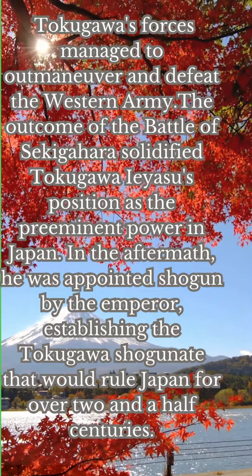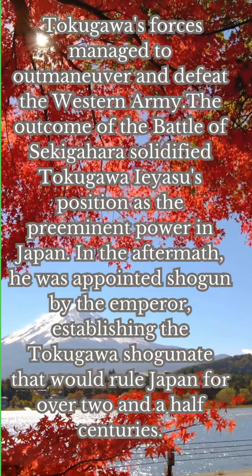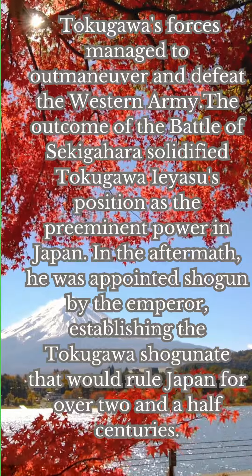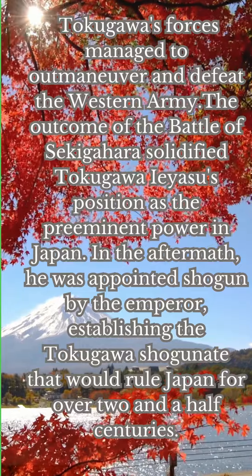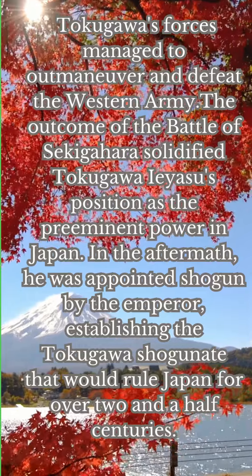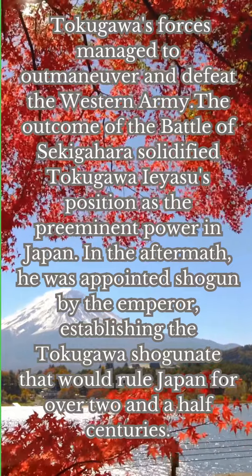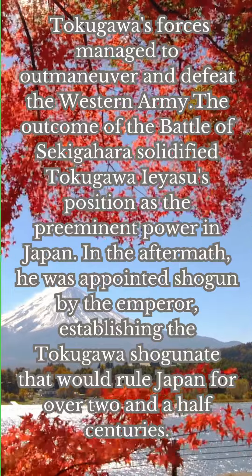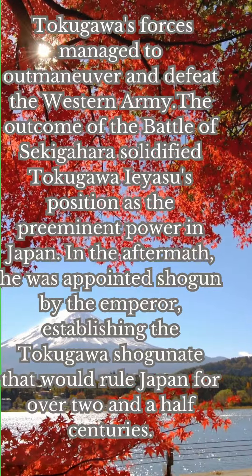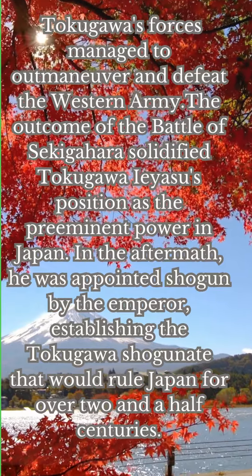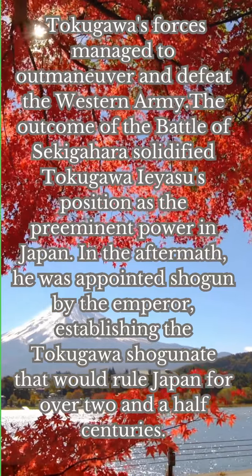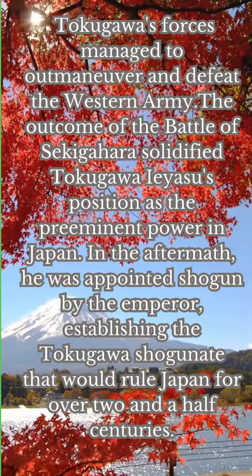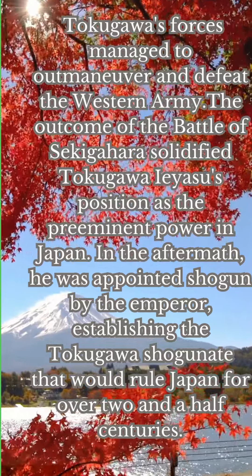Tokugawa's forces managed to outmaneuver and defeat the Western Army. The outcome of the Battle of Sekigahara solidified Tokugawa Aesu's position as the preeminent power in Japan. In the aftermath, he was appointed shogun by the emperor, establishing the Tokugawa shogunate that would rule Japan for over two and a half centuries.